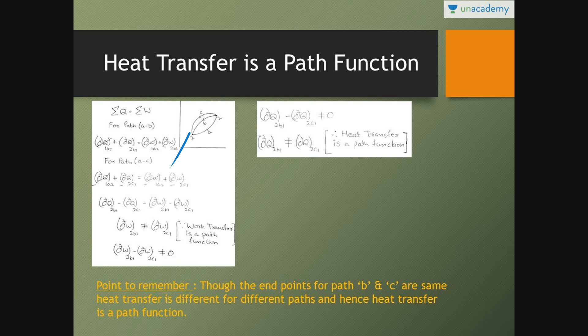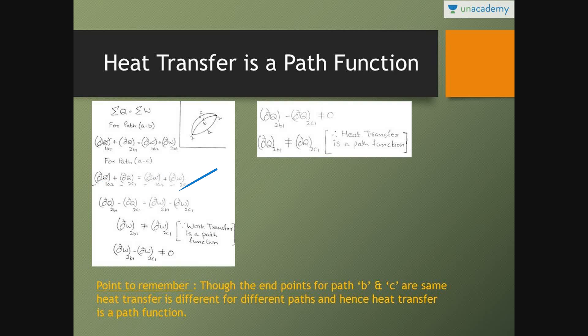Similarly, for cycle 1A2C1, sigma Q equals sigma W: net heat transfer through process A plus net heat transfer through process C equals net work transfer through process A plus net work transfer through process C. Subtracting these two equations, DQ(1A2) and DW(1A2) cancel out, giving us: DQ(2B1) minus DQ(2C1) equals DW(2B1) minus DW(2C1).